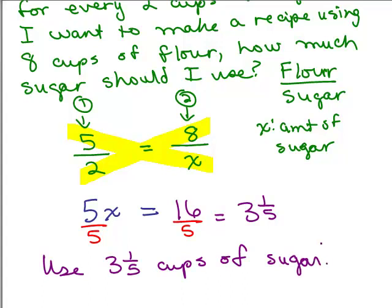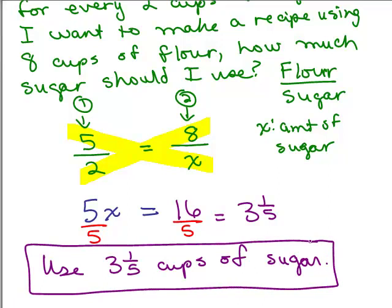You want to make sure you answer the question they asked you. It was a word problem. You don't want to just write x equals 3 and 1 fifth, or 3.2, which also is correct. You want to answer the question in words, because it was a word problem.